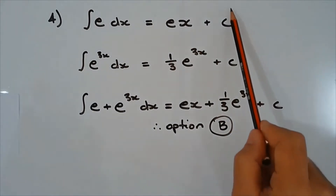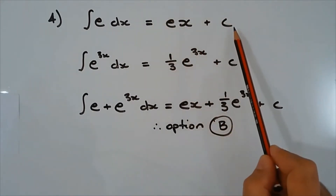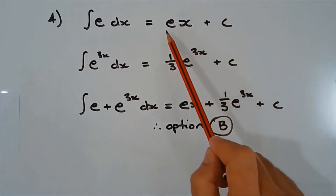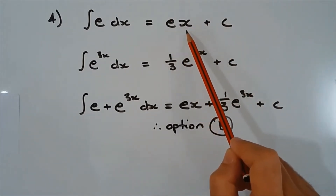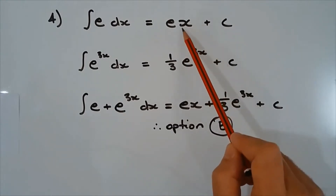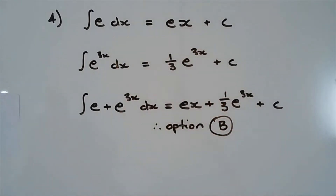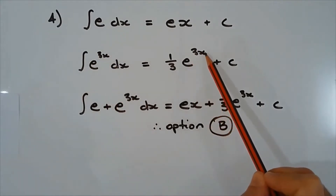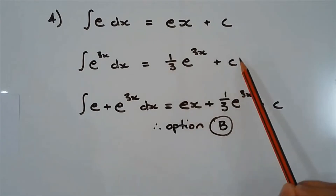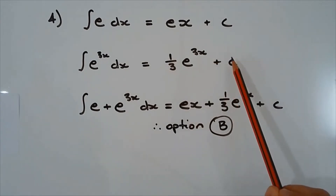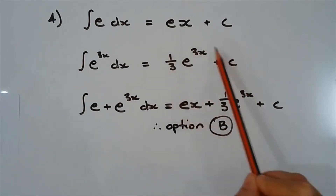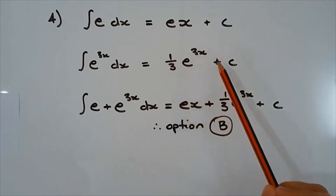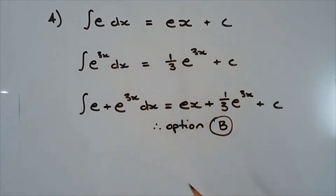To check that result, differentiate the right-hand side. The derivative of c is zero, so c disappears. The derivative of E multiplied by x with respect to x gives E. The integral of E to the power of 3x is E to the power of 3x divided by 3, or multiplied by one-third, plus some constant c. We can verify by differentiating: the derivative of one-third times E to the power of 3x plus c is just E to the power of 3x.